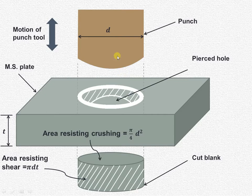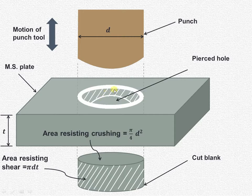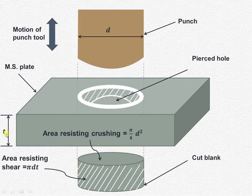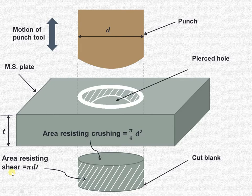When this particular punch tool enters inside this particular plate, the plate will get sheared off and there will be a hole obtained, known as the pierced hole. The punching force will be tangential to this particular area and therefore this is the shear operation. The area resisting shear, indicated by the hatched portion, is the perimeter π d multiplied by the thickness t of the plate, so it is π d t. In this way, both crushing as well as shear stresses are induced during this operation.